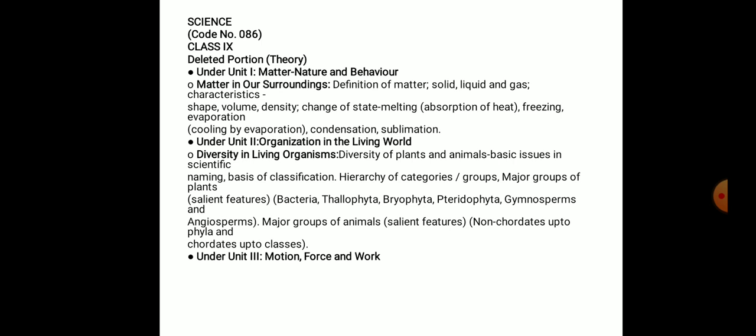Under Unit 2, Organisation in the Living World, in the topic 'Diversity in Living Organisms' — diversity of plants and animals, basic issues in scientific manner, naming, basis of classification, hierarchy of categories, groups, major groups of plants and their salient features, specifically bacteria, thallophyta, bryophyta, pteridophyta, gymnosperms and angiosperms. Also, major groups of animals and their salient features, non-chordata up to phyla and chordata up to classes — all are deleted from Unit 2.